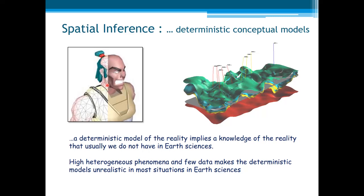But with heterogeneous natural phenomena, things are different. A deterministic model of the reality implies a knowledge of the reality that usually we do not have in earth sciences. In other words, highly heterogeneous phenomena and few data make deterministic models unrealistic in most situations in earth sciences.